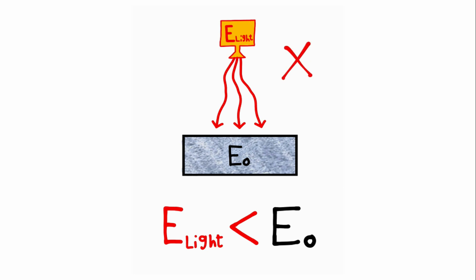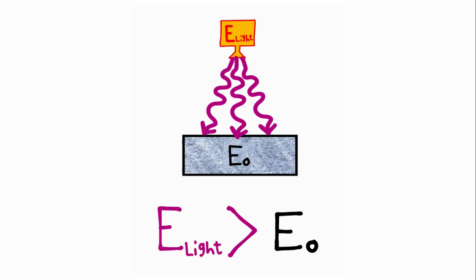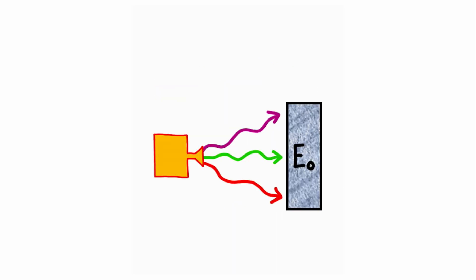However, if the energy of light is stronger than the work function for the metal, then electrons will be ejected from the surface. And not only that, but any excess energy of light will go into the kinetic energy of the electrons, meaning that a much stronger light energy will cause the electrons to move even faster. So that's the entire idea of this light experiment, which is known as the photoelectric effect.